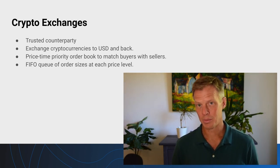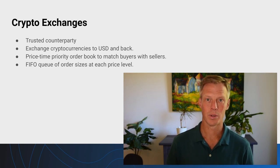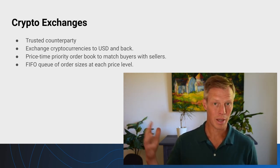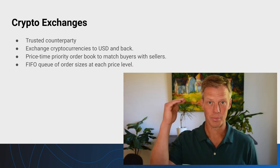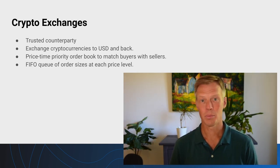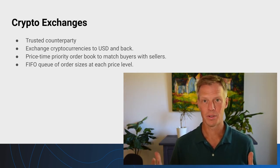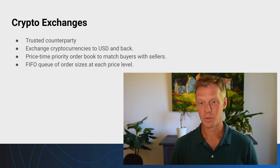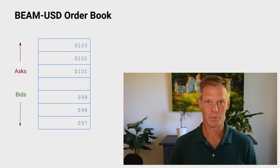If you have a background in computer science, you can think of a price-time priority order book as an ordered map or dictionary where each price level is a key, and at that level there's a first-in, first-out queue that contains the orders.